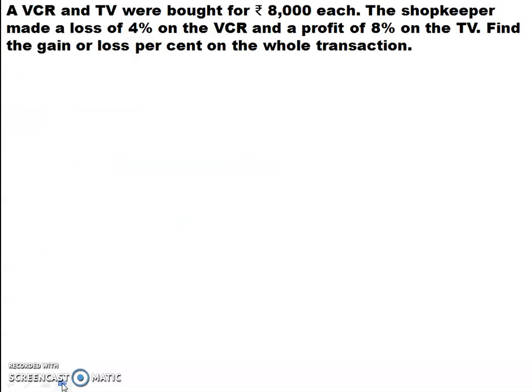A VCR and a TV were bought for Rs. 8000 each. That means the cost price of the VCR and the cost price of the TV were both Rs. 8000. The shopkeeper made a loss of 4% on the VCR and a profit of 8% on the TV. He bought them together but sold them separately, suffering a loss on the VCR and gaining a profit on the TV.